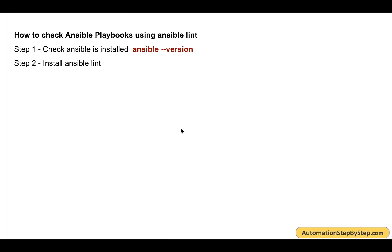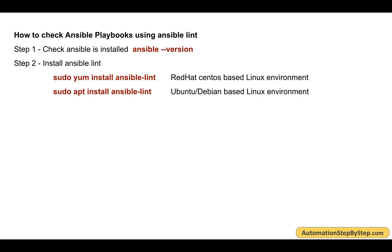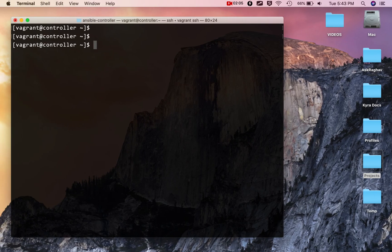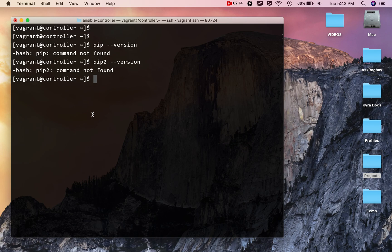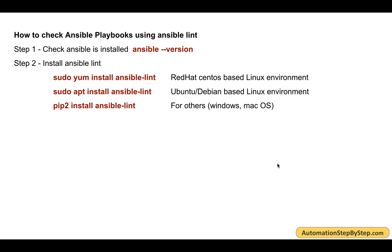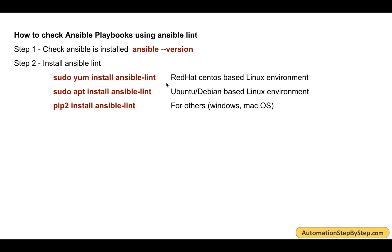Next, we will install Ansible Lint. The command depends on your operating system. If you are on a Red Hat or CentOS based Linux system, use `sudo yum install ansible-lint`. On Ubuntu or Debian, use `sudo apt install ansible-lint`. For Windows, Mac, or other systems with pip, use `pip install ansible-lint`. You can check if pip is available by running `pip --version`. In my case, I am on CentOS so I will use the yum command.